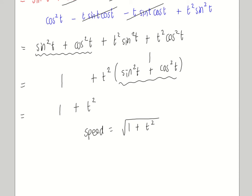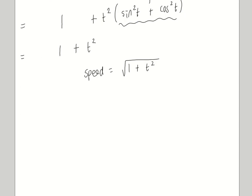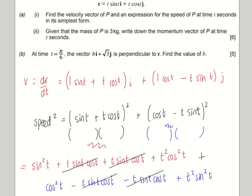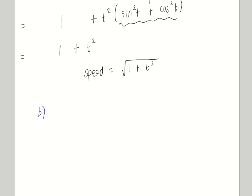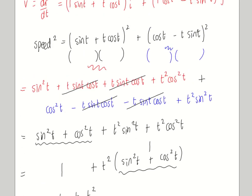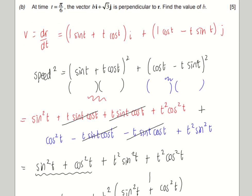Right, then we're asked to calculate the momentum. So the momentum is mass times velocity. This is part b. The mass is 3. So it's momentum equals mv, so it's 3 times your velocity vector. So that's 3 lots of sine t plus t cos t in the i direction, and 3 lots of cos t minus t sine t in the j direction. So that's easy enough.